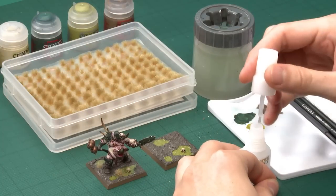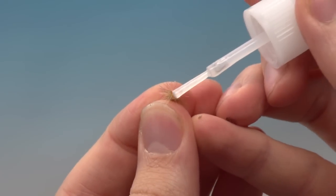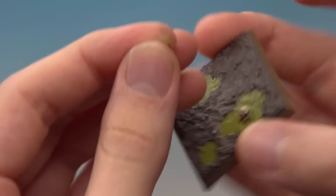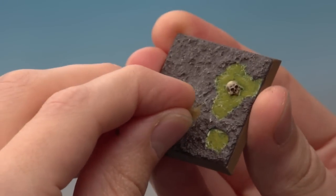Get some super glue thin, you don't need very much, and all you do is just paint a small amount of this onto the back of the tuft like that.